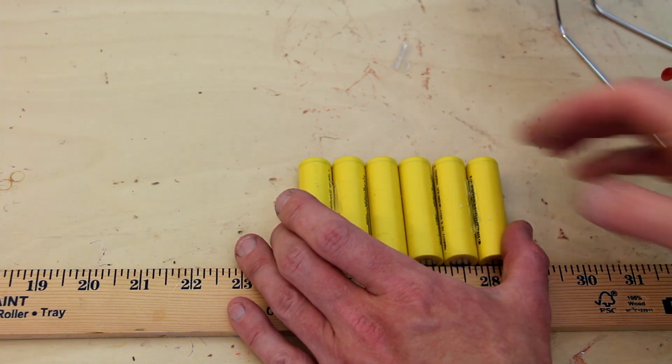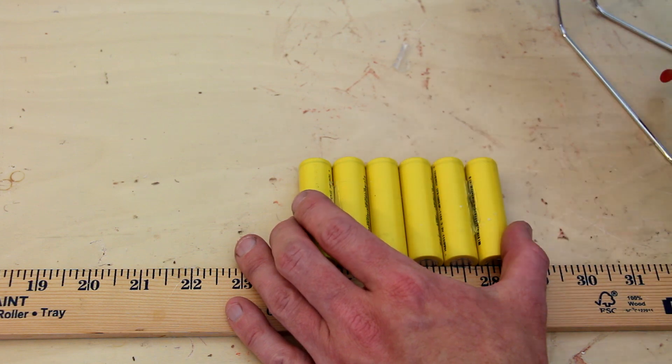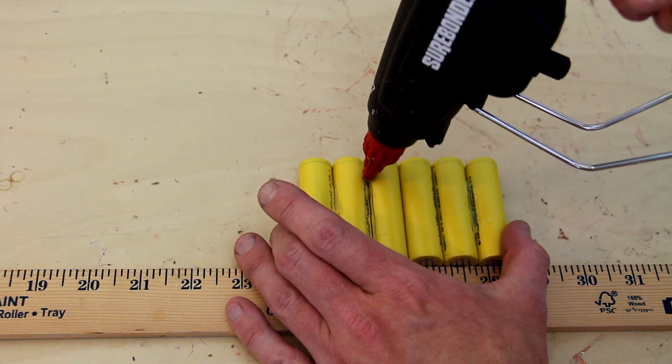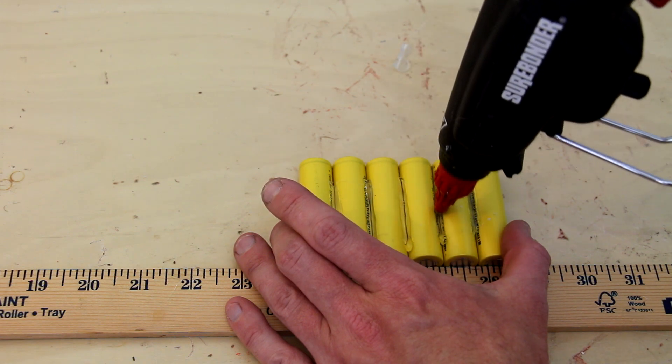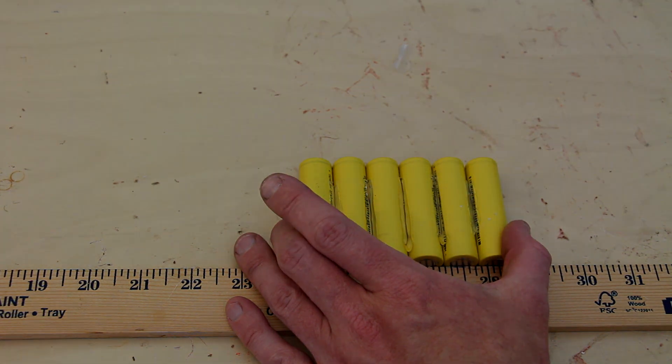The hot glue isn't so much a permanent fix as just something to hold them in place long enough for me to solder a nickel strip to the ends. Note here that all six cells are facing the same direction and thus the same polarity.